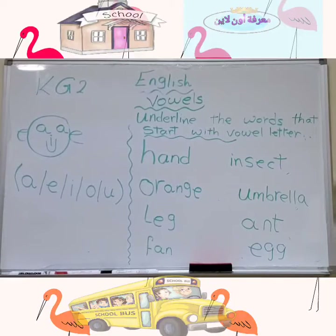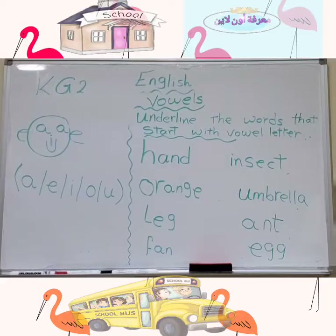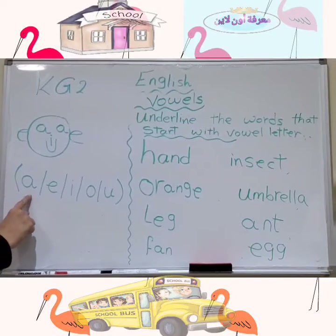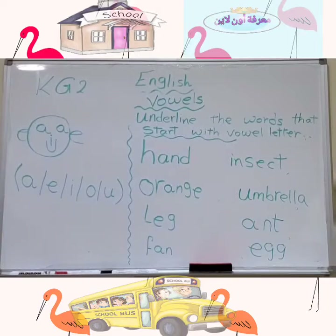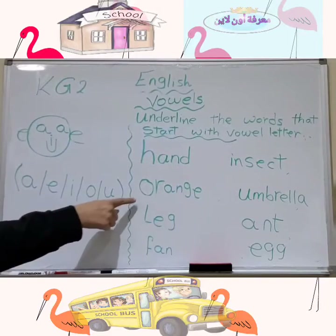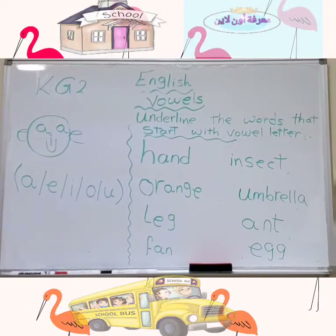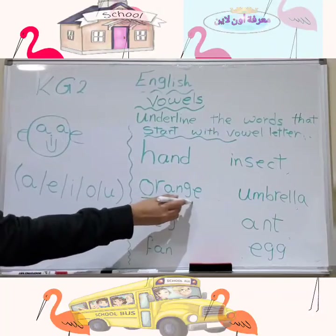Underline the words that start with vowel letters. The first word is 'hand.' Hand starts with the letter H. Is H a vowel? No, H is not a vowel, so we will not underline it. The next word is 'orange.' Orange starts with the letter O. O is a vowel — yes! So we will underline it.